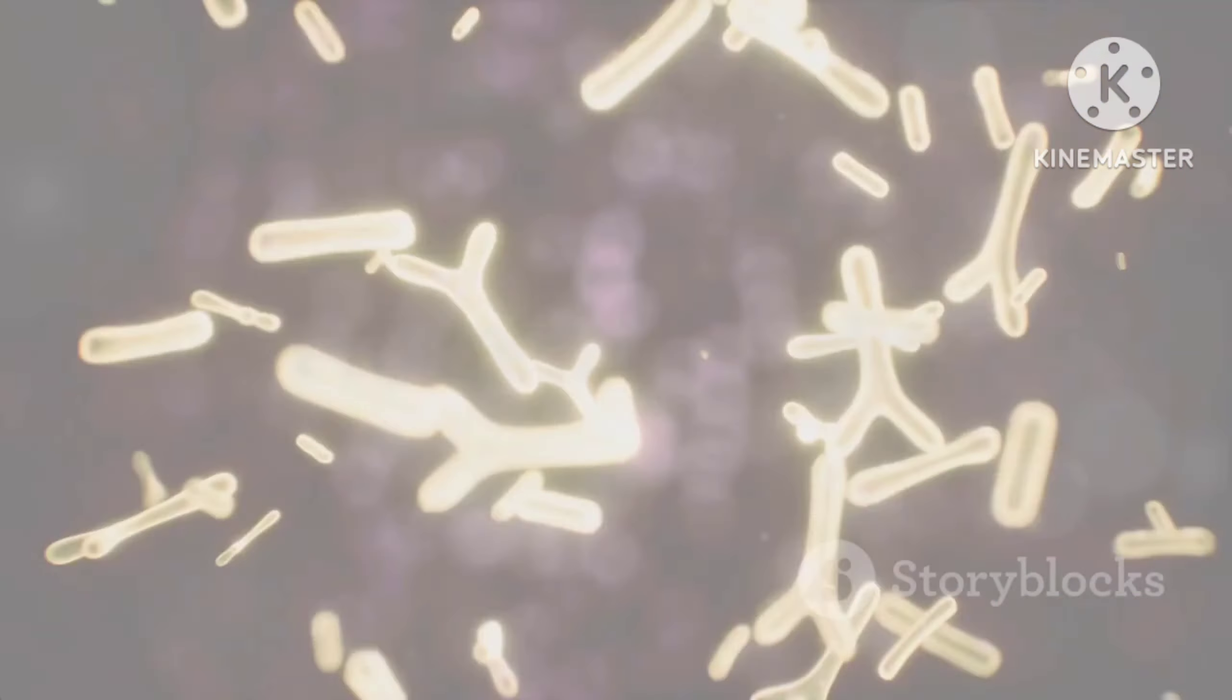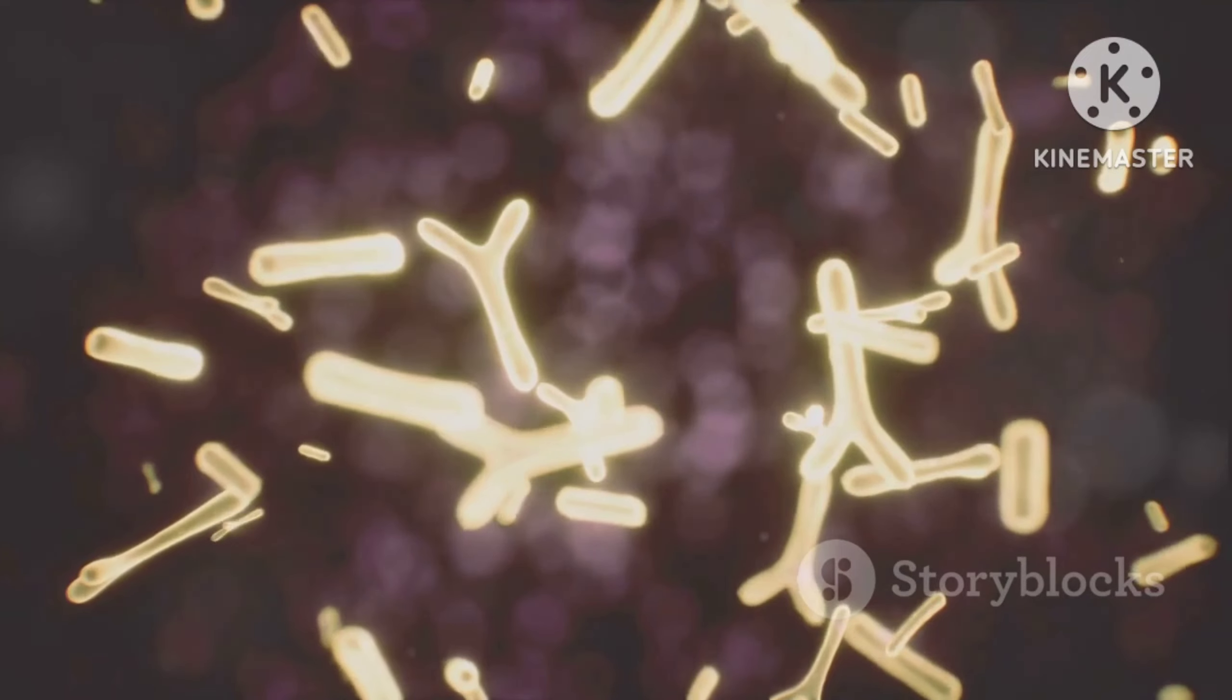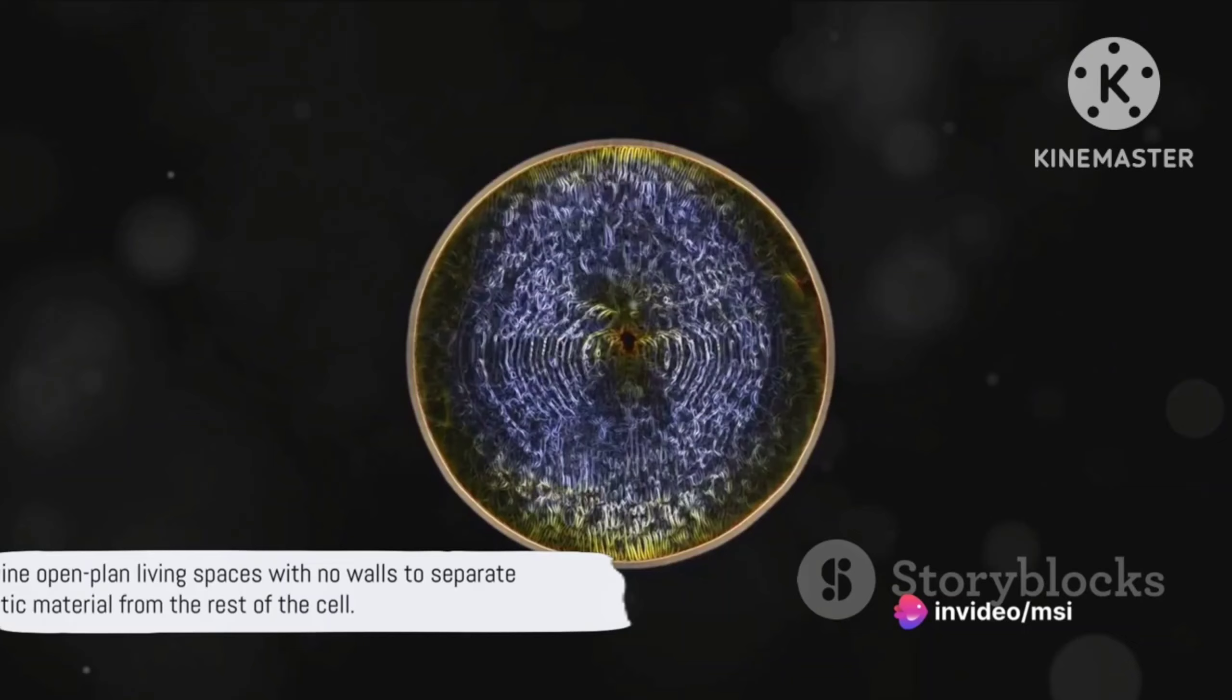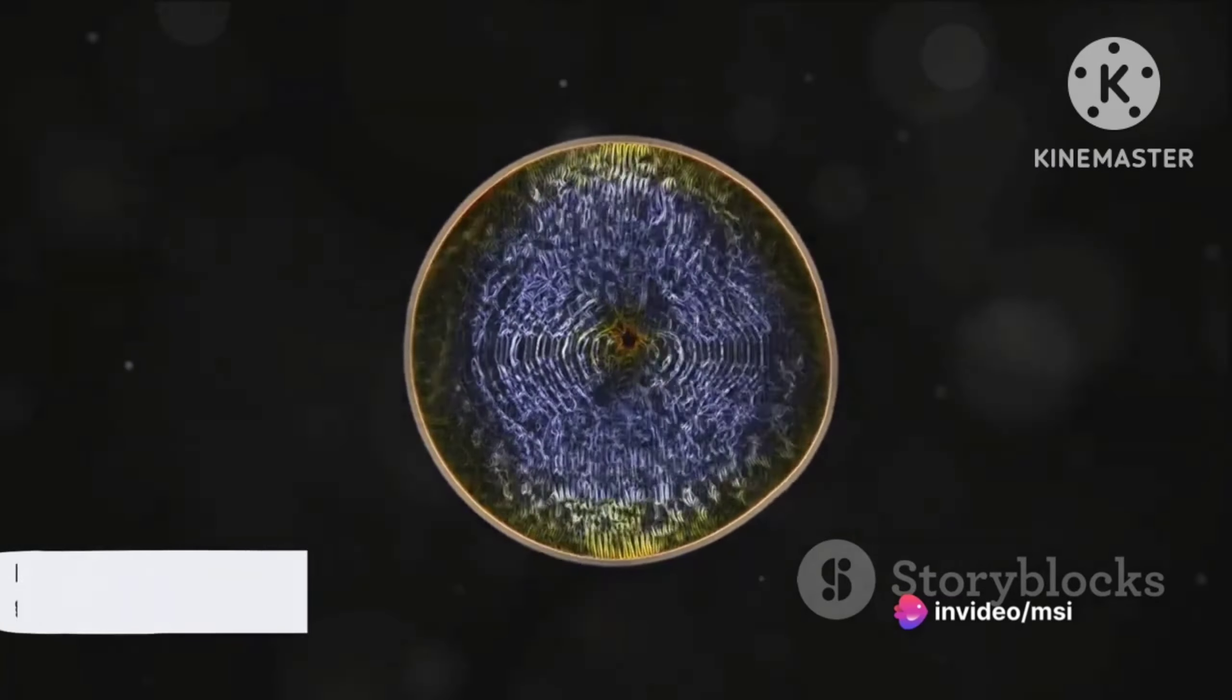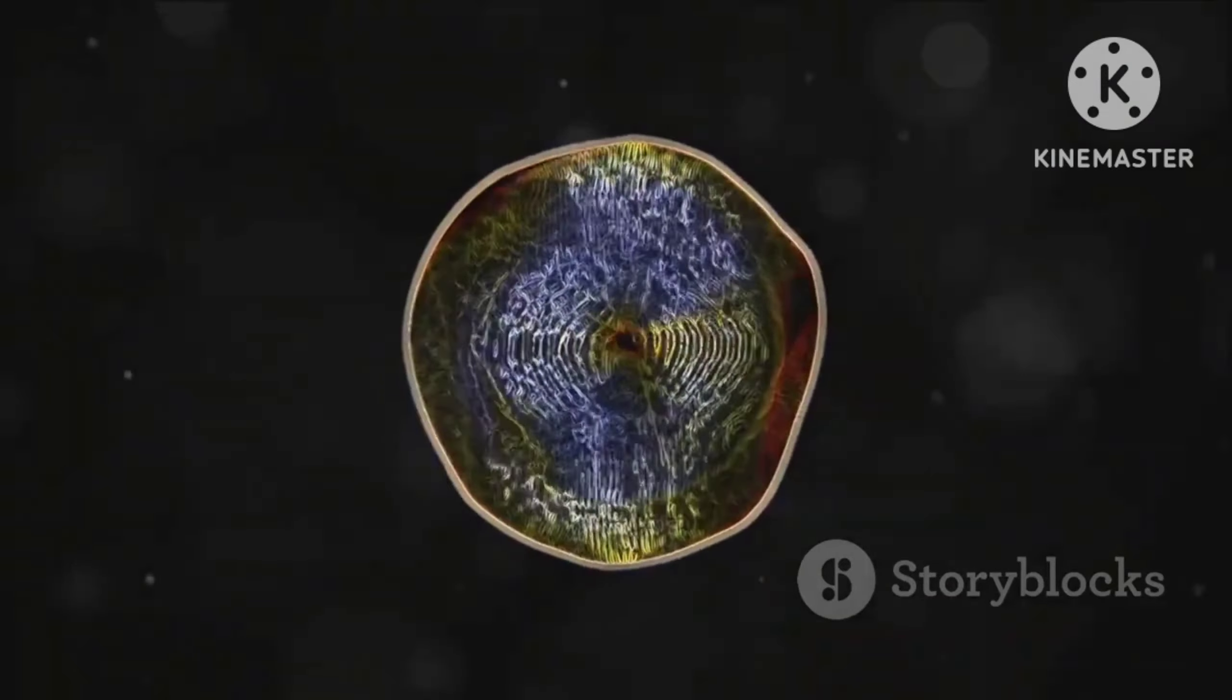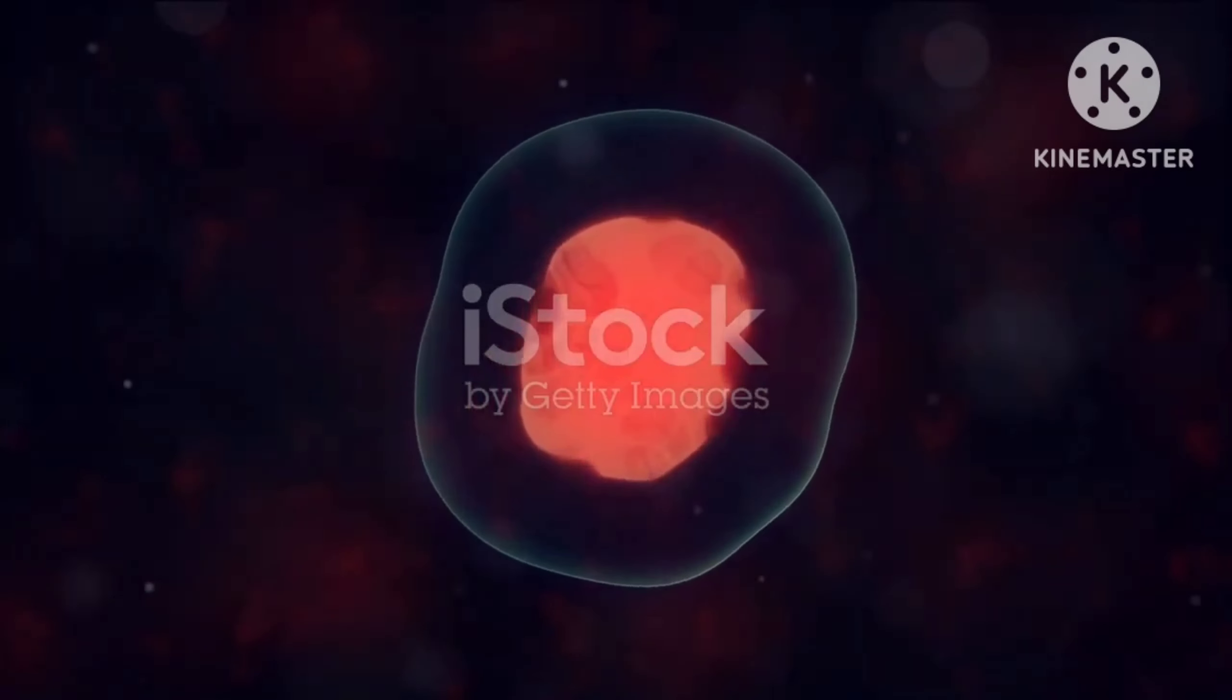Picture a tiny studio apartment, compact and efficient. This is akin to a prokaryotic cell, simpler in structure and generally much smaller than its eukaryotic counterpart. These cells are like open-plan living spaces, with no walls to separate the genetic material from the rest of the cell. The DNA floats freely in the cytoplasm, the jelly-like substance that fills the cell.